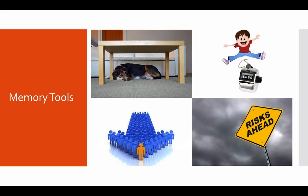The dog lying underneath the table should remind you that derivatives derive their value from the underlying. Next, for the types of derivatives, you can see a boy jumping over a number counter, which shows that one of the derivative types is an over-the-counter or OTC derivative.